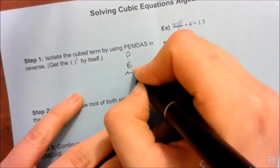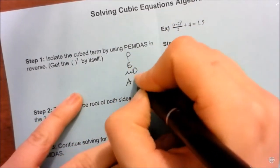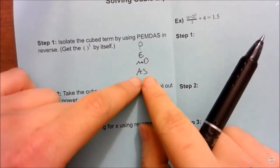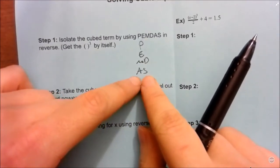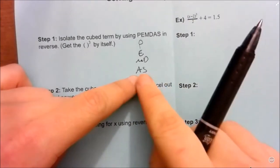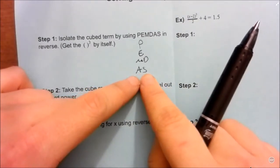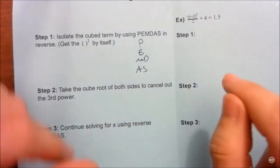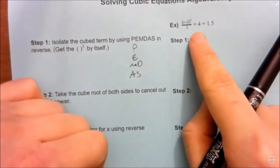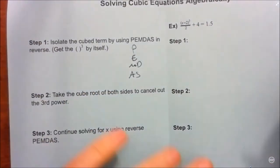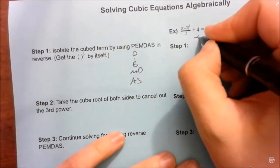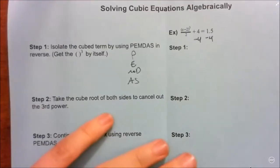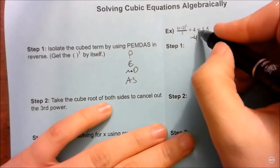Let me write out PEMDAS here. When we're solving and trying to get the X by itself, we always want to start at the bottom. We want to add or subtract anything that's outside the parentheses to get it away from the X. So all I see that I can do right now is that plus 4, so I cancel it out by subtracting from both sides of the equation.